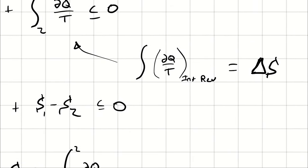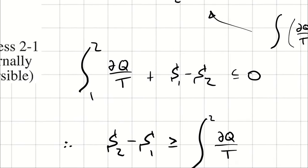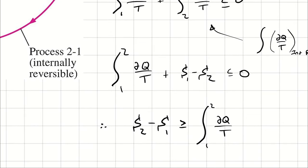Therefore, I can write delta S. That delta S is going to be the end state point, one, minus the beginning state point, two, which means when I plug that in I have S1 minus S2. Note the serifs, which indicate that this is talking about total entropy, not mass-specific entropy.